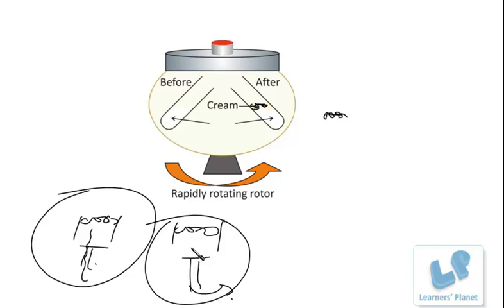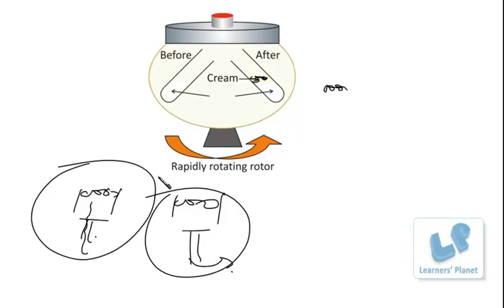In a centrifuge, the mixture is rotated at very high speed by passing electric current. Because of high speed, particles move randomly, light particles collide and form aggregates, then settle depending on their densities — lighter ones form aggregates at the top layer and heavier ones at the bottom. For separating constituents of a heterogeneous mixture, magnets can also be used in a process called magnetic separation.